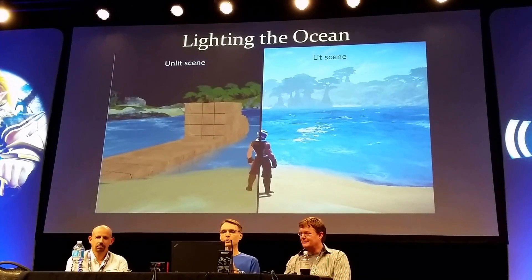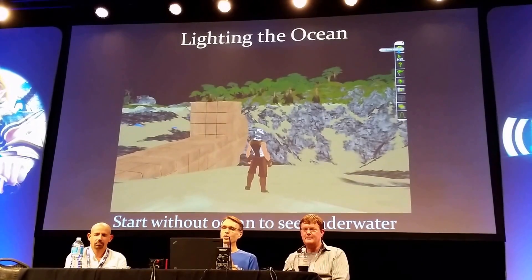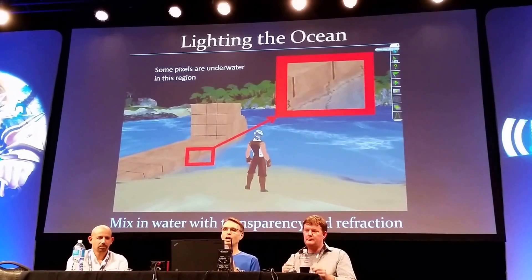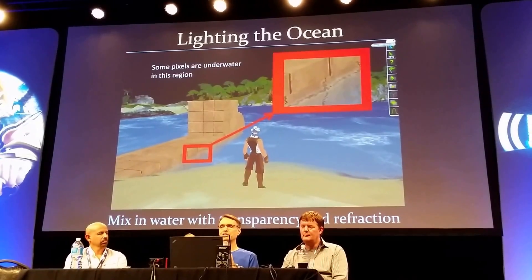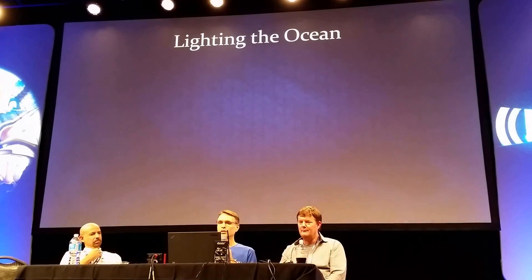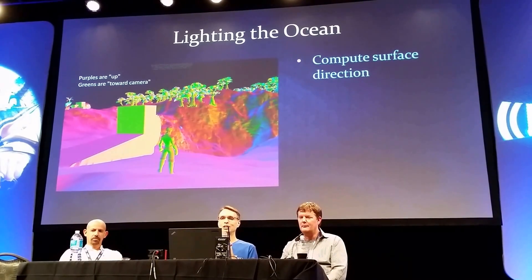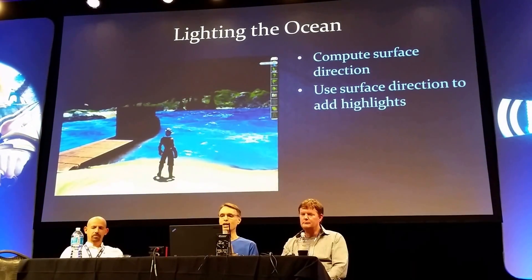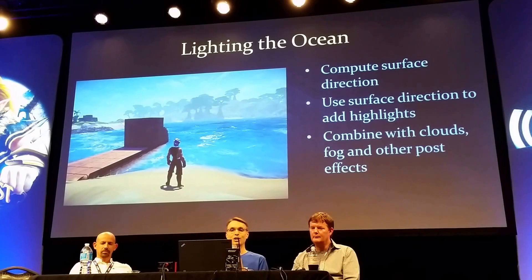How do we light the ocean and make it sparkle? The difference between an unlit scene and a lit scene is pretty dramatic. We start with no water, because we need to be able to see through to the bottom — the water is translucent. Then we add the water layer, transparency, and some refraction effects, which actually offset the underwater pixels a little bit to make it look as if the light is refracting through the surface of the water. Then we compute the surface direction — each of those colors represents a different direction toward the camera. We use the surface directions to add highlights to the waves, and then combine that with cloud fog and other post effects to get the final image.